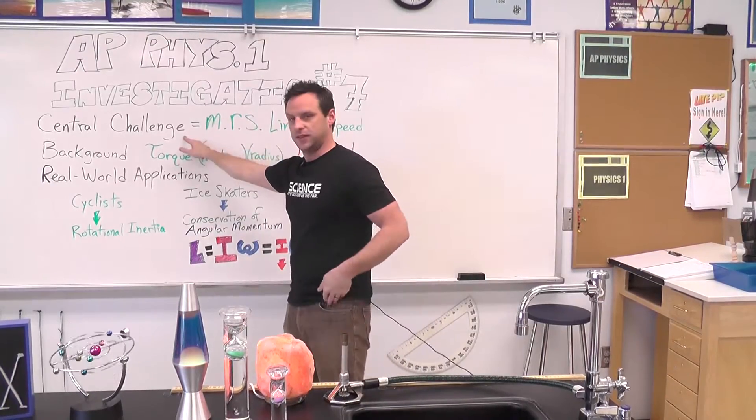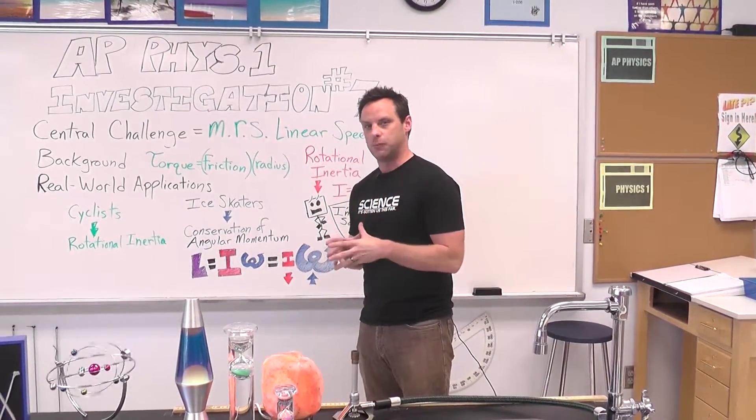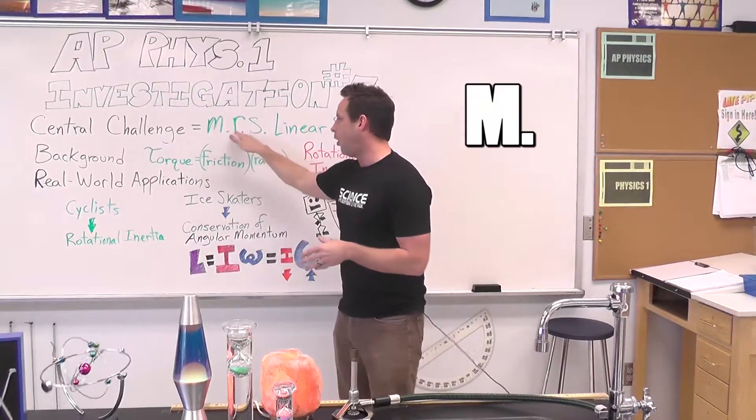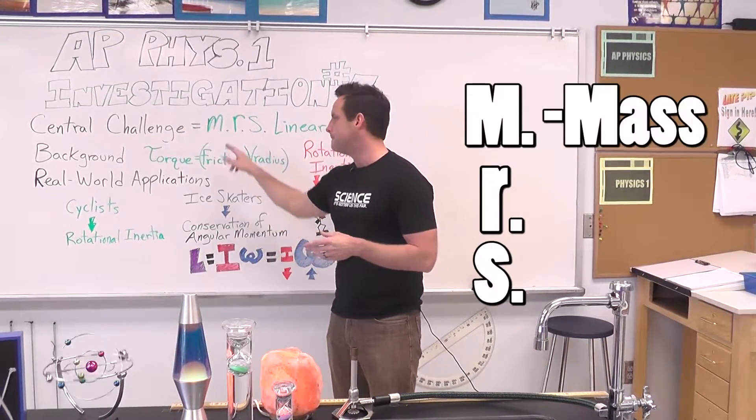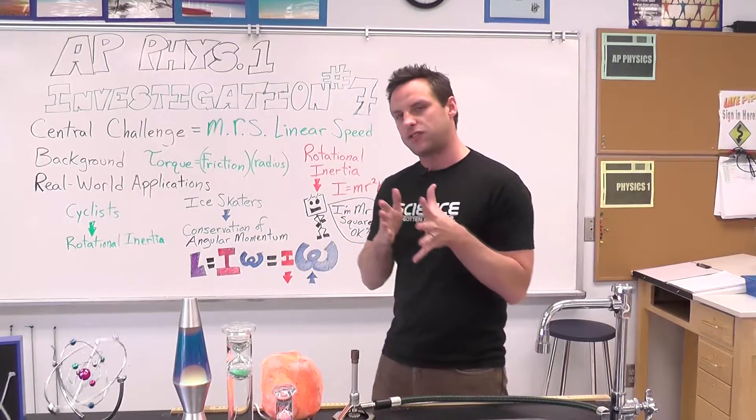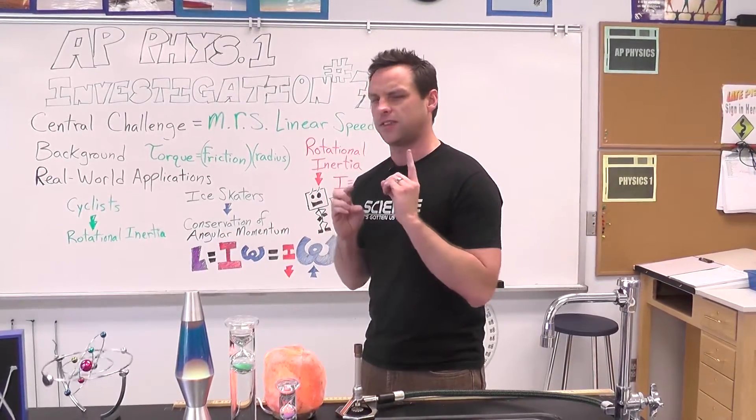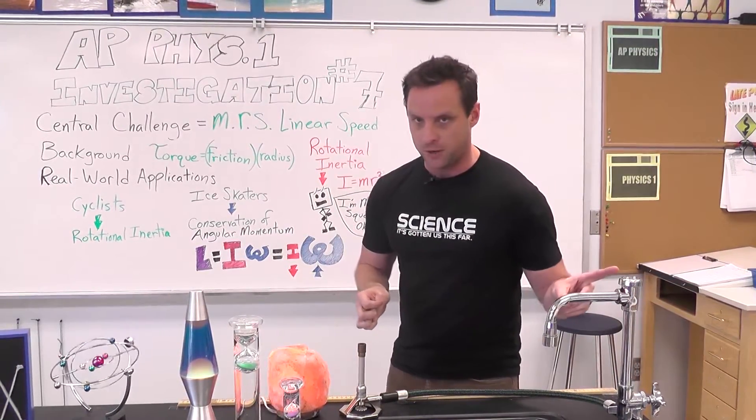So the central challenge of the investigation, I've written out MRS Linear Speed. This is just to help you remember what we're doing. MRS is an acronym for Mass, Radius, and Shape. And what we want to find out is how does mass, radius, and shape of different objects that roll down a ramp affect their linear speed at the bottom of the ramp.